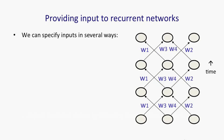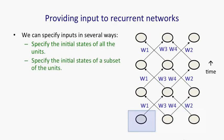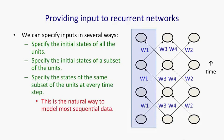There's many ways in which we can provide the input to a recurrent neural net. We could, for example, specify the initial state of all the units. That's the most natural thing to do when we think of a recurrent net like a feedforward net with constrained weights. We could specify the initial state of just a subset of the units, or we could specify the states at every time step of a subset of the units, and that's probably the most natural way to input sequential data.